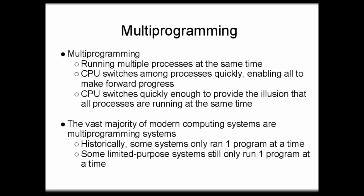The first concept to introduce is multiprogramming. Multiprogramming is simply the idea that we can run multiple processes, or multiple instances of potentially several programs, at the same time. We can do this by having the CPU switch quickly among the different processes, enabling all of them to make forward progress per unit of human perceivable time. The CPU will switch quickly enough to provide the illusion that all the processes are running at the same time, even if we only have one processor core.